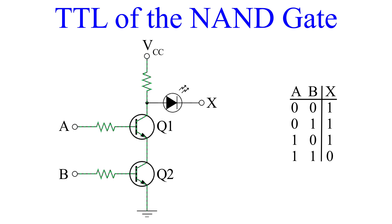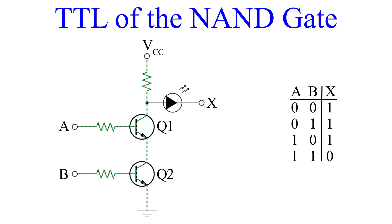You may be wondering why the current doesn't split after the first resistor at Q1's collector — and you may have wondered the same when looking at the AND gate's TTL. The answer is that we assume the output node to be some sort of load. This load has a resistance much greater than the resistance of the two transistors combined, so the transistors can be thought of as short circuits in comparison to the load.